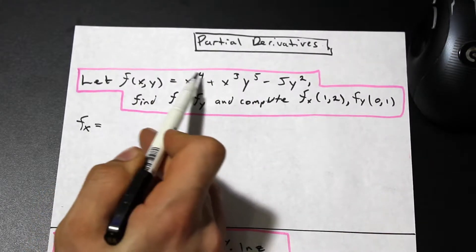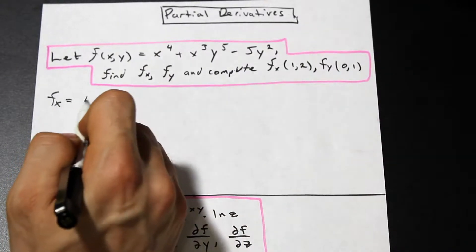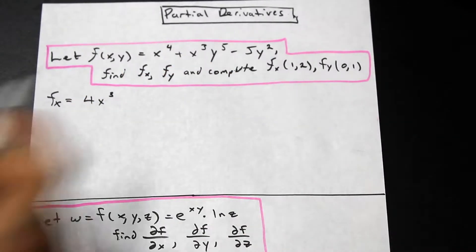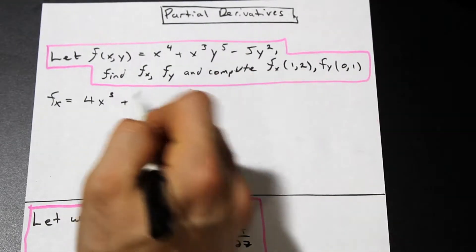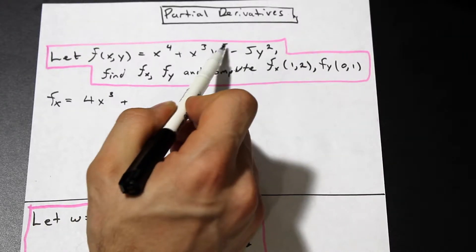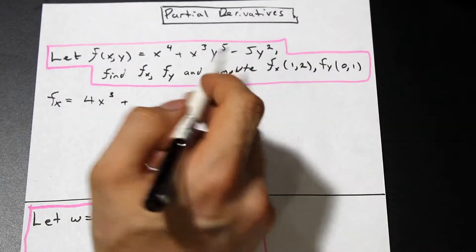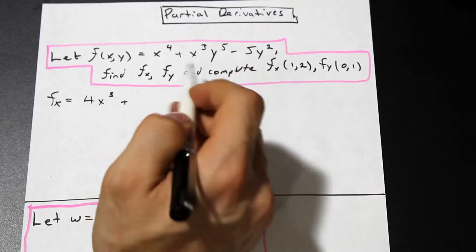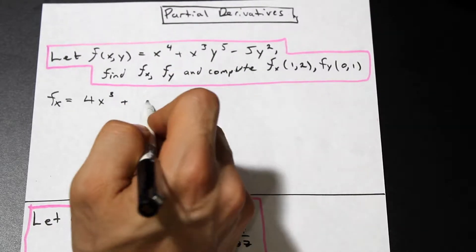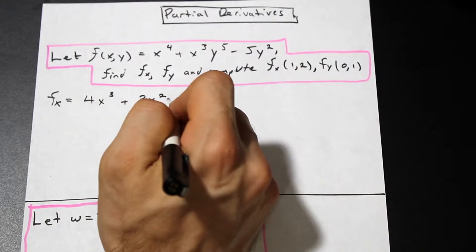We have x to the fourth; taking the partial derivative with respect to x we apply the power rule — bring down 4 to the front, giving 4x cubed. Now for the next term, y is considered a constant, so y to the fifth just stays as y to the fifth. We perform the derivative on x cubed: bring the exponent down, giving 3x squared. So we get 3x squared times y to the fifth — y to the fifth stays the same because we treat it as a constant.